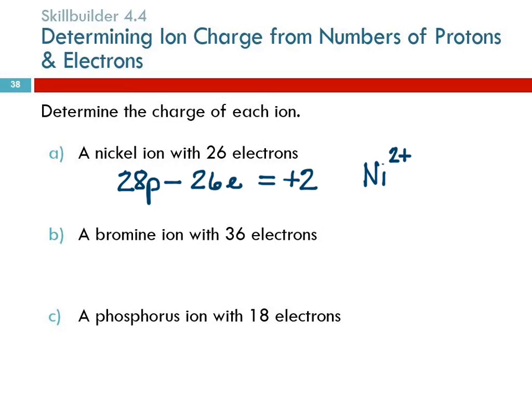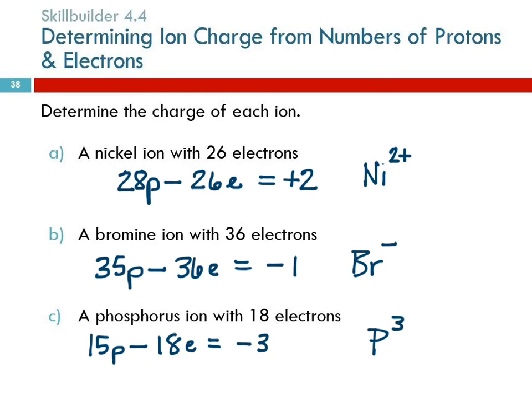How about bromine? How many protons does bromine have? 35. To find the charge we take the number of protons, subtract the number of electrons and we get minus one. So the symbol for bromine ion would be Br with a negative. I wouldn't mark it wrong if you put one minus but I'd correct it because it looks funny. How about phosphorus? 15 protons, we're getting that from the periodic table. Subtract the number of electrons, get a negative three charge. So the symbol would be P 3-.